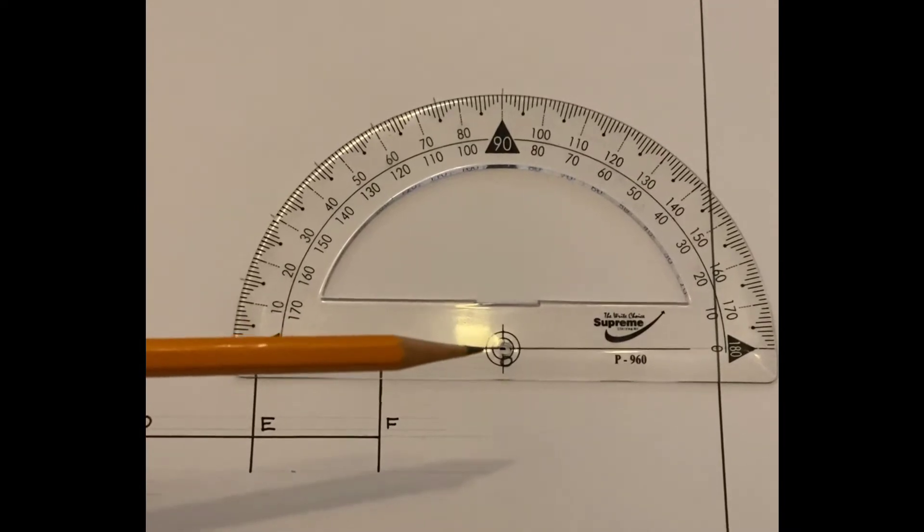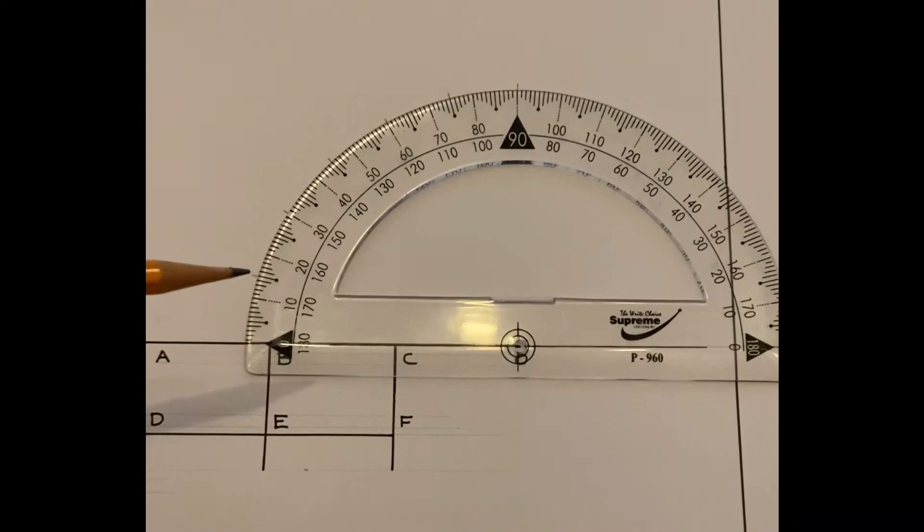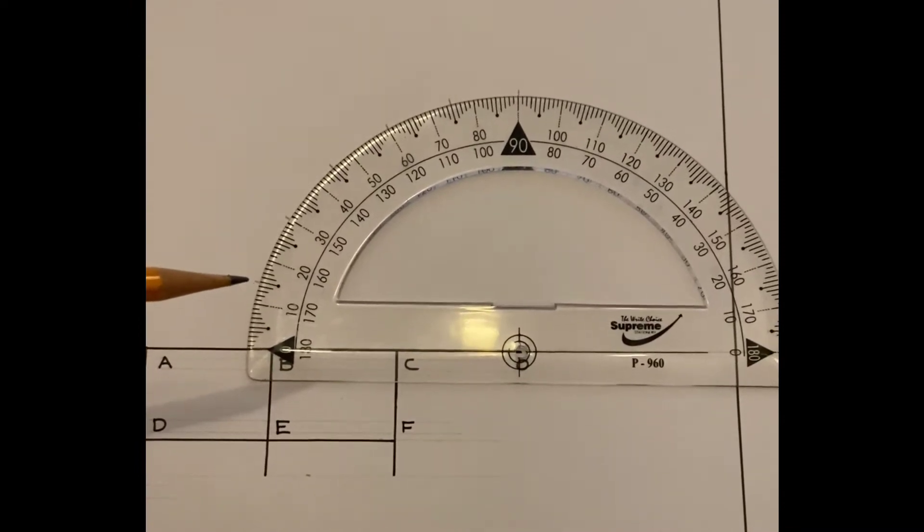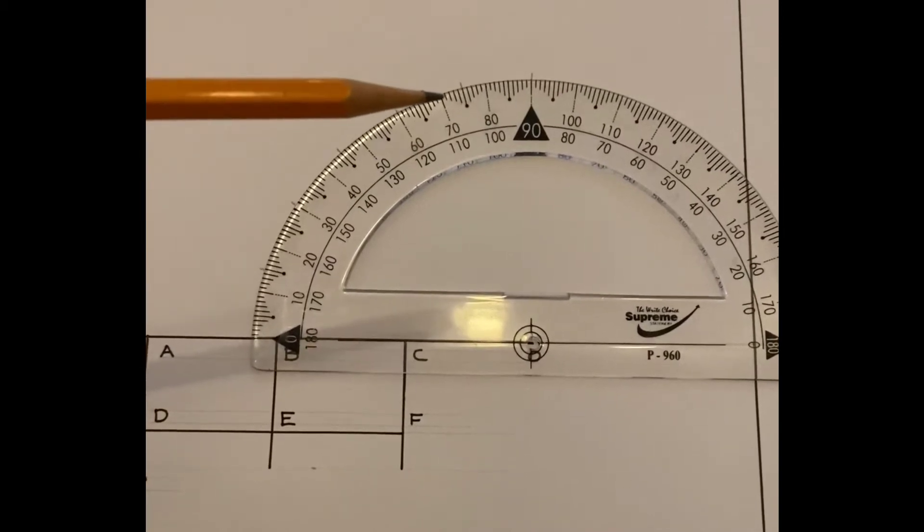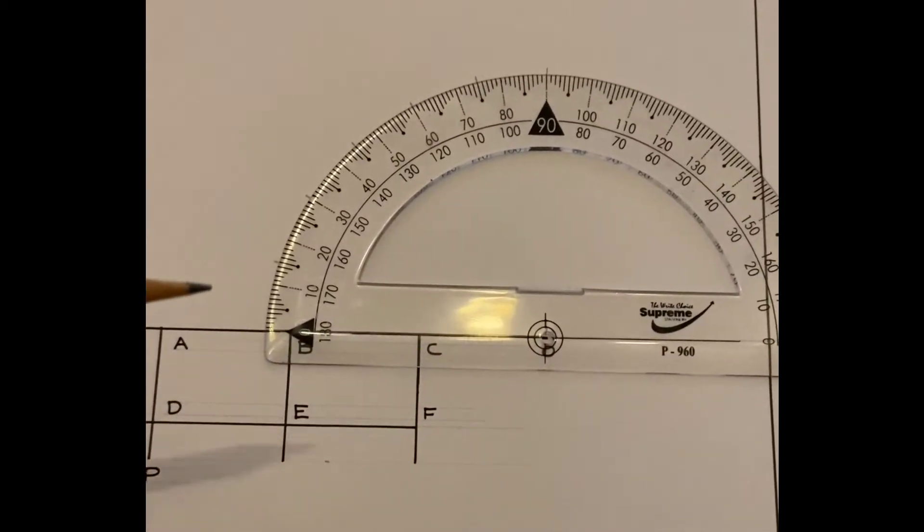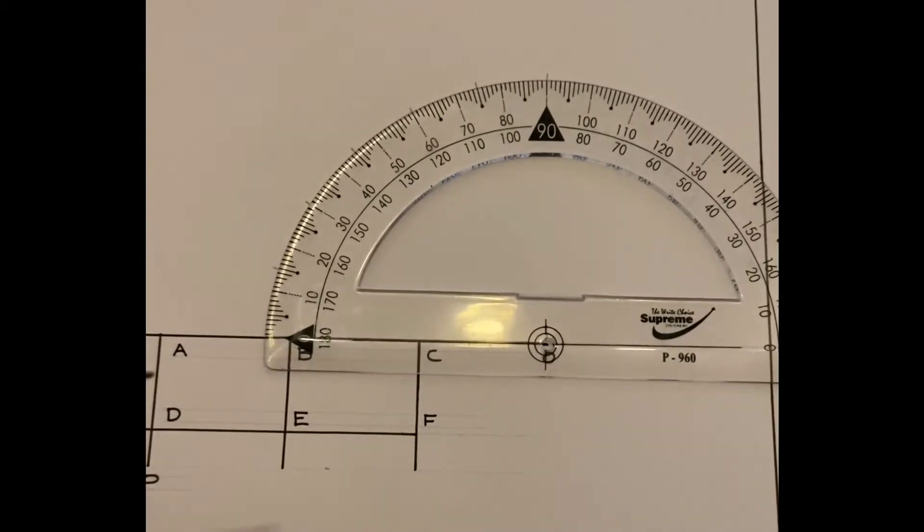So we place the centre of the protractor over O and I've marked off divisions of 15 degrees so 15, 30, 45, 60, 75 and then finally 90 and that gives me even divisions all the way up as far as 90 degrees.